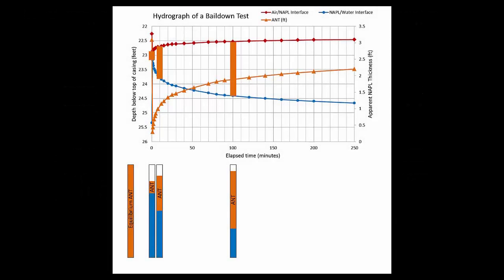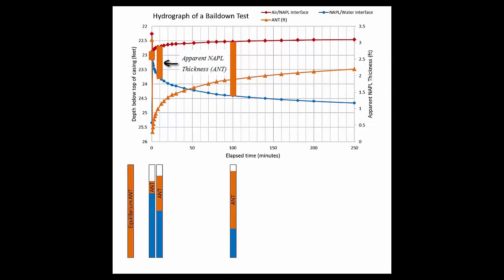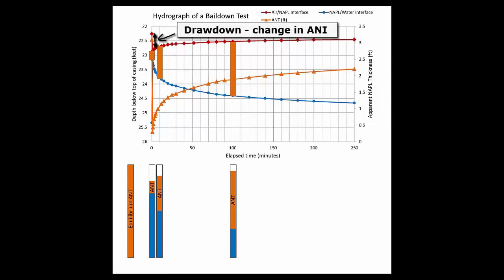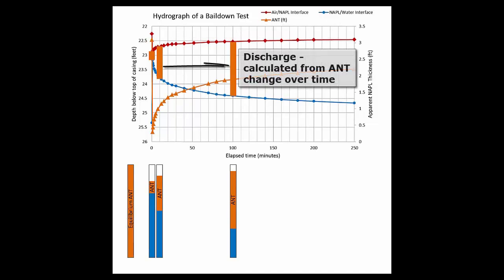Drawdown and discharge can be visualized on a hydrograph. The air-NAPL and NAPL-water interface elevations are plotted on a linear time scale. The difference between them is the apparent NAPL thickness. Drawdown is the difference between the equilibrium air-NAPL interface elevation and the air-NAPL interface elevation at each gauging point. Discharge is calculated from the change in apparent NAPL thickness over time and the well construction dimensions.